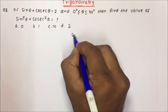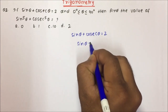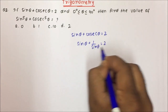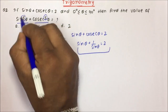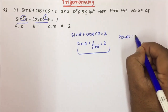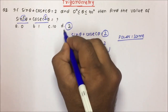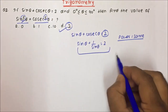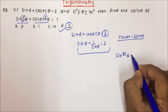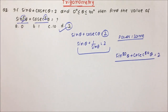Question number 2: if sin θ + cosec θ = 2, you have to calculate sin⁵θ + cosec⁵θ. The form is sin θ + 1/sin θ, which is the same form, and the power is also the same. So the answer will be option D, which is 2. This is a standard problem; they will just change the power — for example, sin⁸⁰θ + cosec⁸⁰θ — and the answer will always be 2.